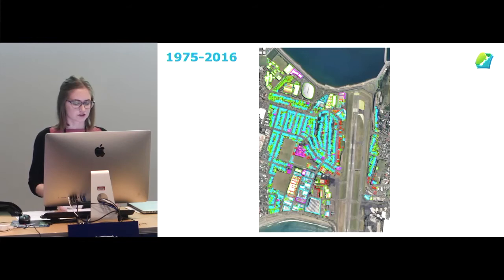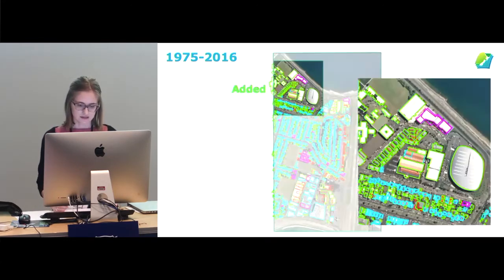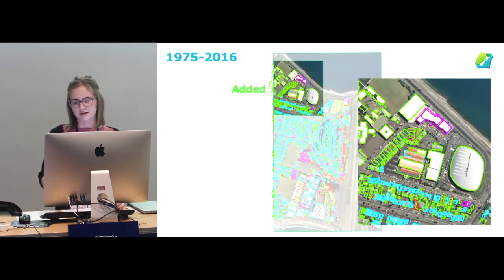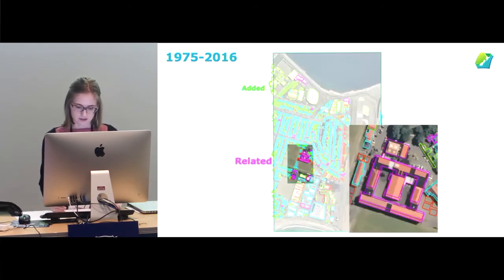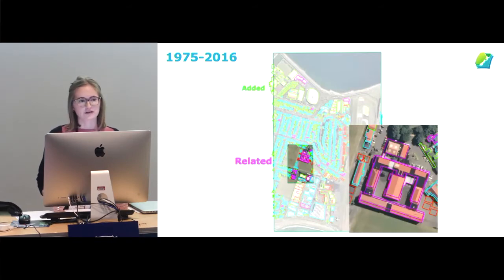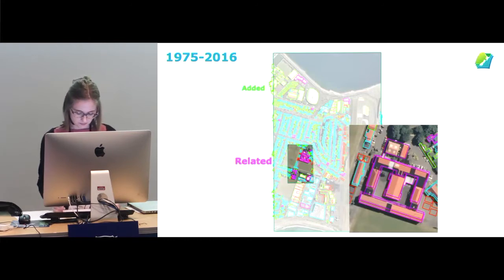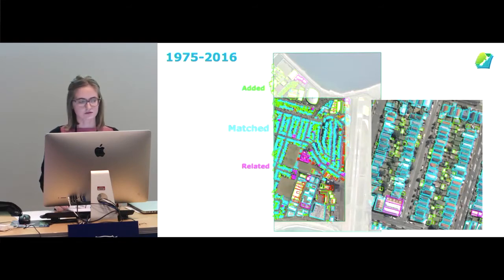Once we're happy with the data we publish it to production and begin the whole process again with the next dataset. Between 1975 and the 2016 dataset, there are still a number of new green building outlines showing continued development of the waterfront region, infilling of houses on large sections, and continued removal of buildings near the airport. We also see a new relationship type — related outlines — for buildings that have been split, merged, or both. The plugin groups all of these into the related classification, and matched buildings carry through the IDs generated all the way back from the 1941 imagery.